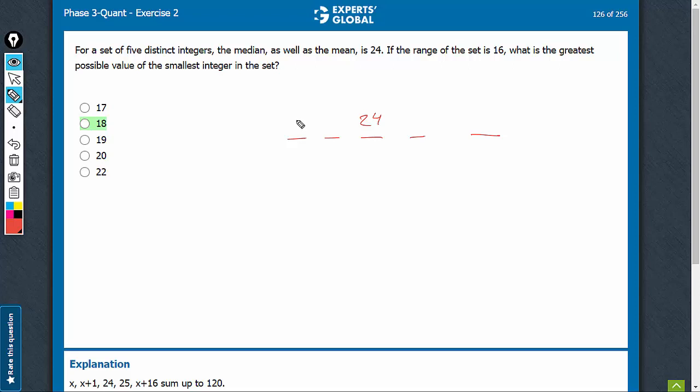We have the value assumed as x. Let's say we have to maximize this, and therefore we would want to minimize all the other numbers.